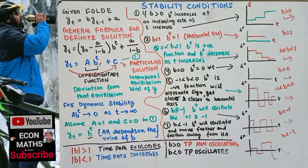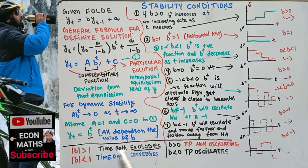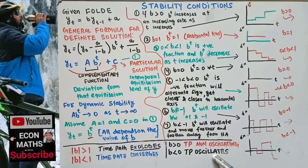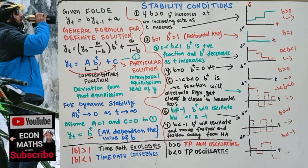Dynamic stability depends on the value of b, and we have four conditions: if modulus of b is greater than 1, the time path explodes; if modulus of b is less than 1, the time path converges; if b is greater than 0, the time path is non-oscillating; if b is less than 0, the time path oscillates. This was explained in more detail in the earlier video. Thank you.